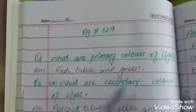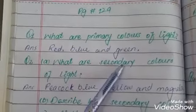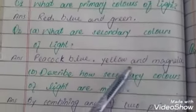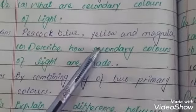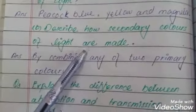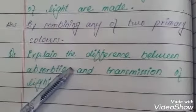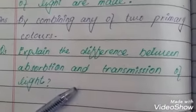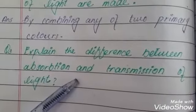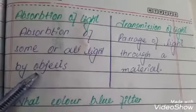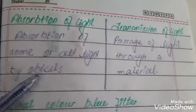Questions on page 129. Question one: what are the primary colors of light? Red, blue, green. Question two: what are secondary colors of light? Peacock blue, yellow, and magenta. Question three: describe how secondary colors are made — by combining any two primary colors. Question four: explain the difference between absorption and transmission of light — absorption is the taking in of light by objects, and transmission is the passage of light through a material.